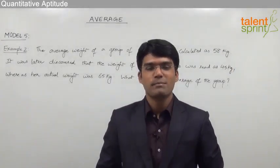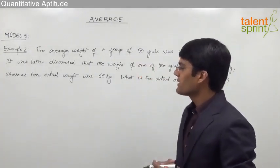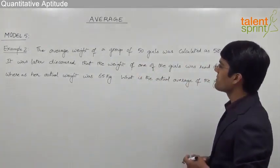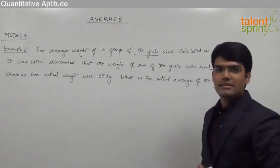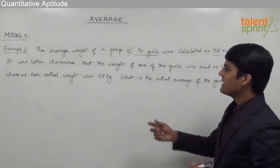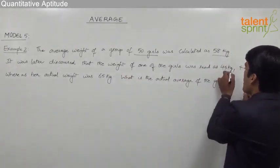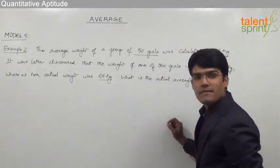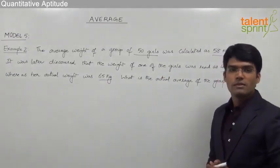Let us take another example based on the model we just discussed. The average weight of a group of 50 girls was calculated as 58 kg. It was later discovered that the weight of one of the girls was read as 45 kg whereas her actual weight was 65 kg. What is the actual average of the group?